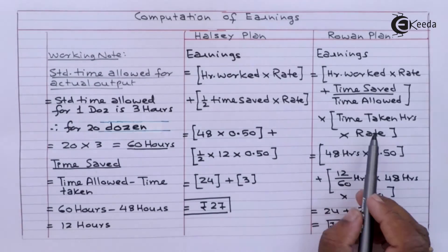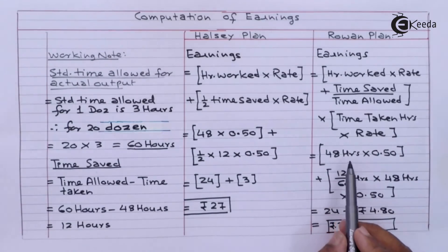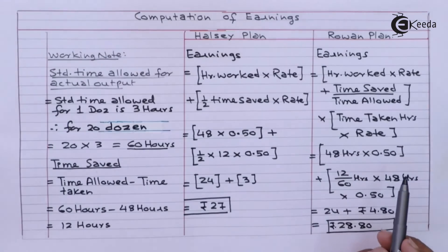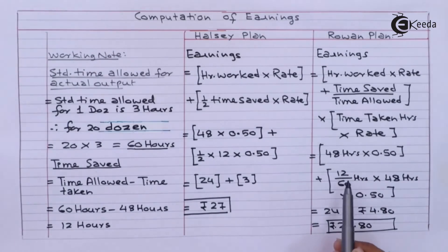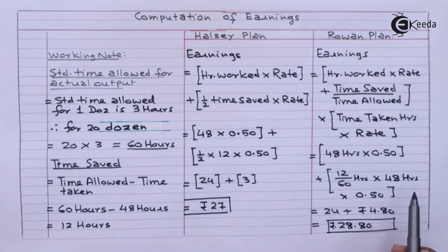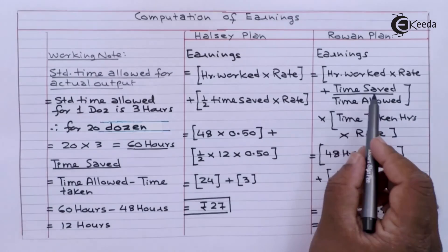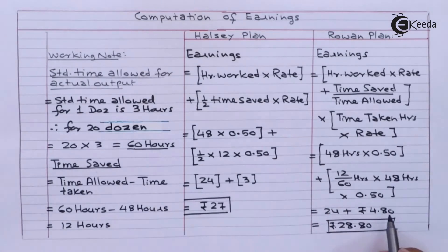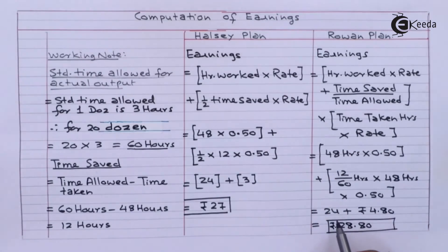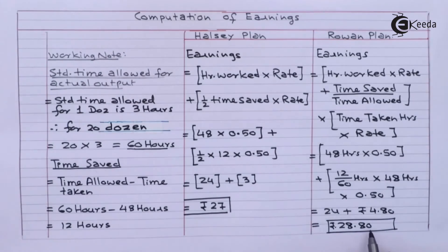Time taken is 48 hours, rate is 50 paise, time saved is 12 hours, time allowed is 60 hours. Working this out: 48 hours at 50 paise comes to 24 rupees, and the bonus portion comes to 4 rupees 80 paise. So wages under the Rowan plan are 28 rupees 80 paise.